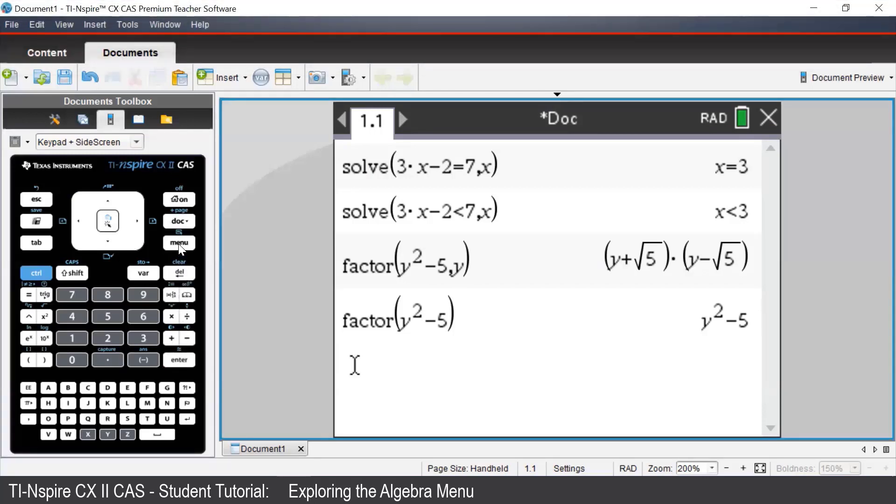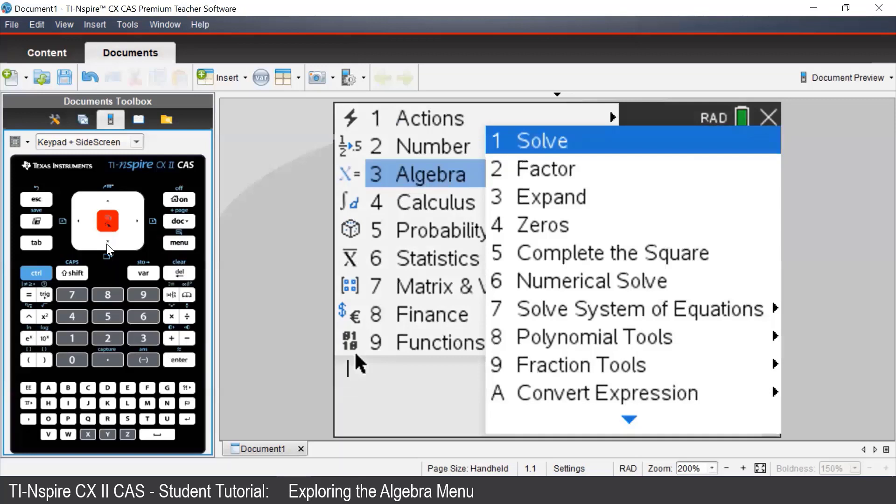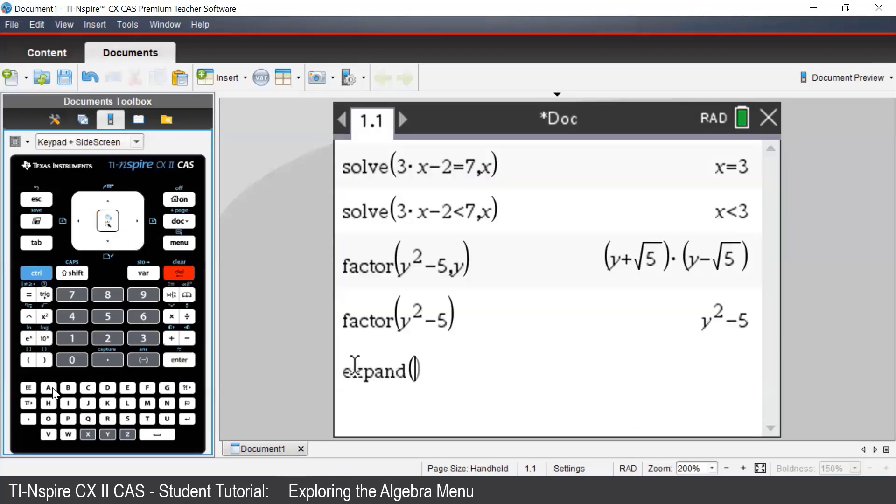If we want to multiply and expand brackets, we can use the expand command in the algebra menu. To use the expand command, we type in our expression, making sure to put a multiply sign between our coefficients, our pronumerals, and our brackets.